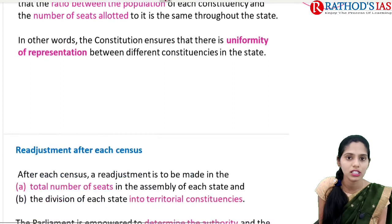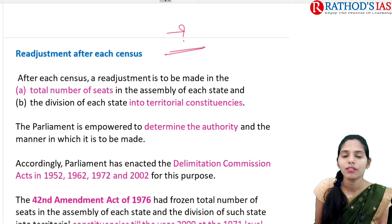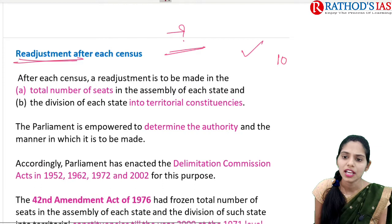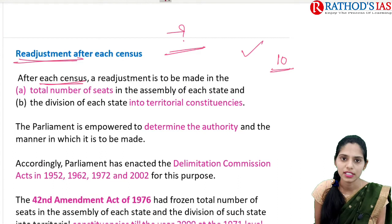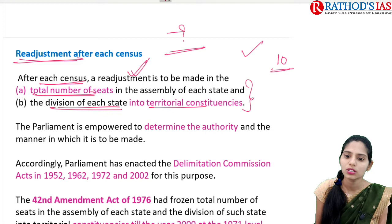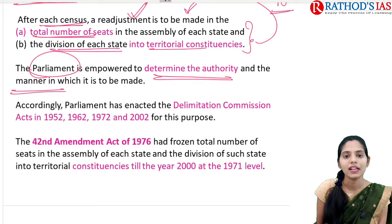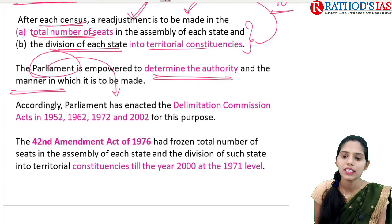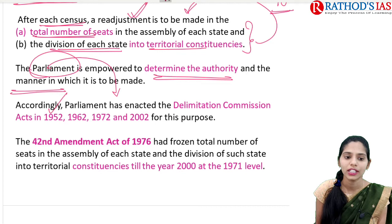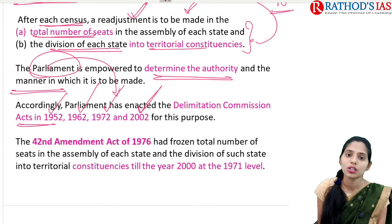Regarding readjustment after each census: the census is conducted once every 10 years. After each census there is a need for readjustment in the total number of seats in the assembly and the division of each state into territorial constituencies. Parliament has the power and is empowered to determine the authority and manner in which it is to be made. Accordingly, Parliament enacted the Delimitation Commission Act, first in 1952, with amendments in 1962, 1972, and 2002. We need to remember three important constitutional amendment acts: the 42nd, 84th, and 87th.